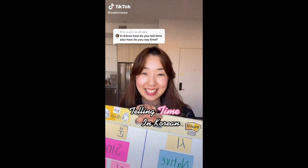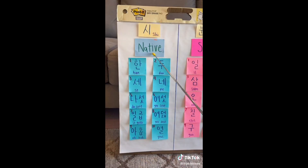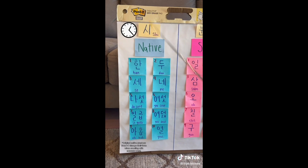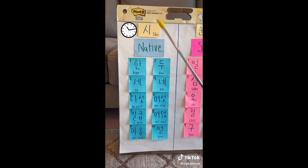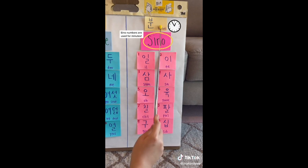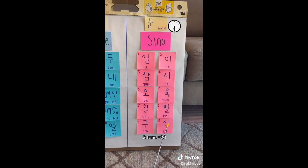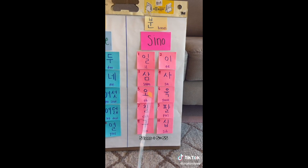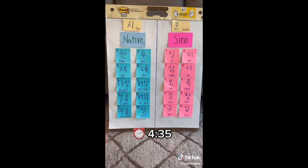Telling time in Korean. Let's start with hours. To count hours, you use native Korean numbers followed by 시. For example, one o'clock is 한 시, two o'clock is 두 시, three o'clock is 세 시, five o'clock is 다섯 시, ten o'clock is 열 시, and twelve o'clock is 열두 시. For minutes, you use Sino numbers followed by 분. Five minutes is 오 분, twenty minutes is 이십 분, and fifty-five minutes is 오십오 분. So a time like 4:35 would be 네 시 삼십오 분.